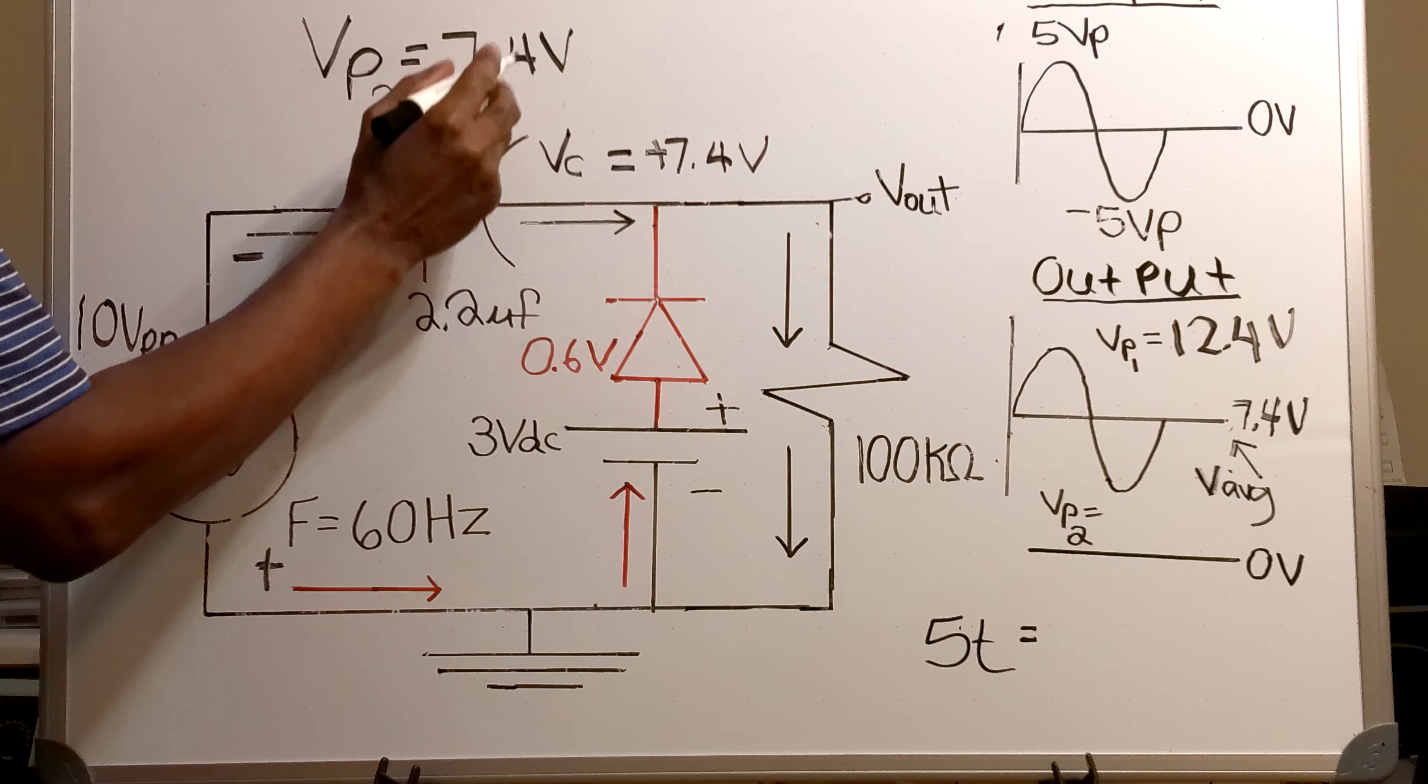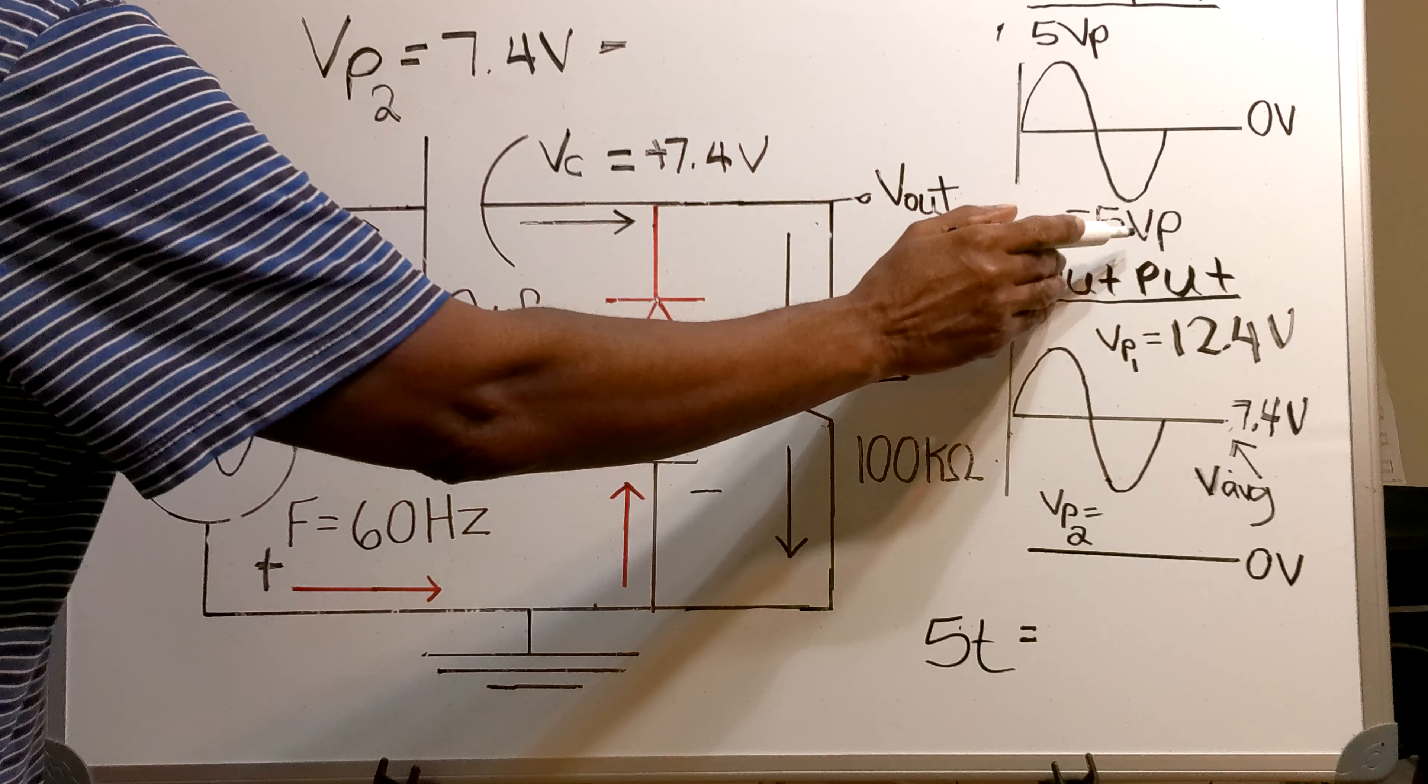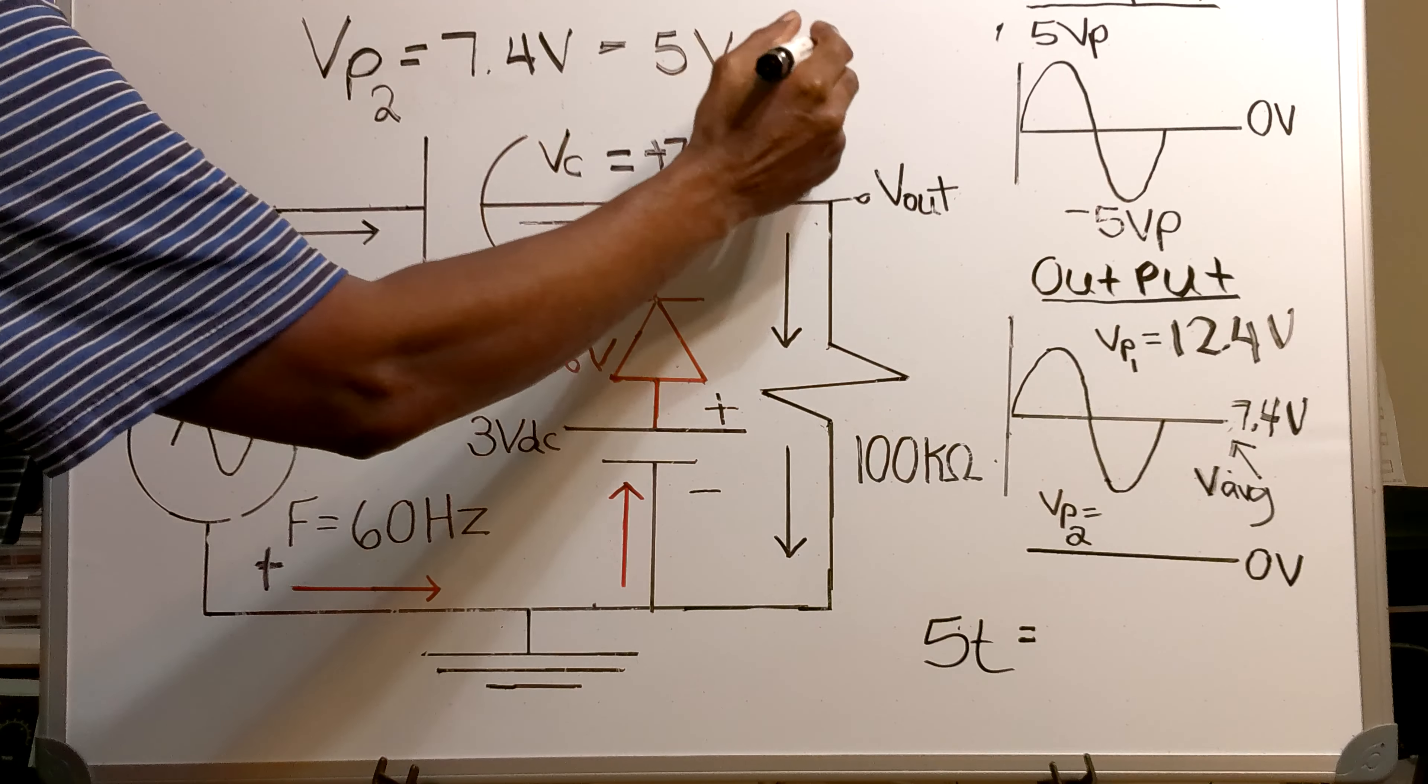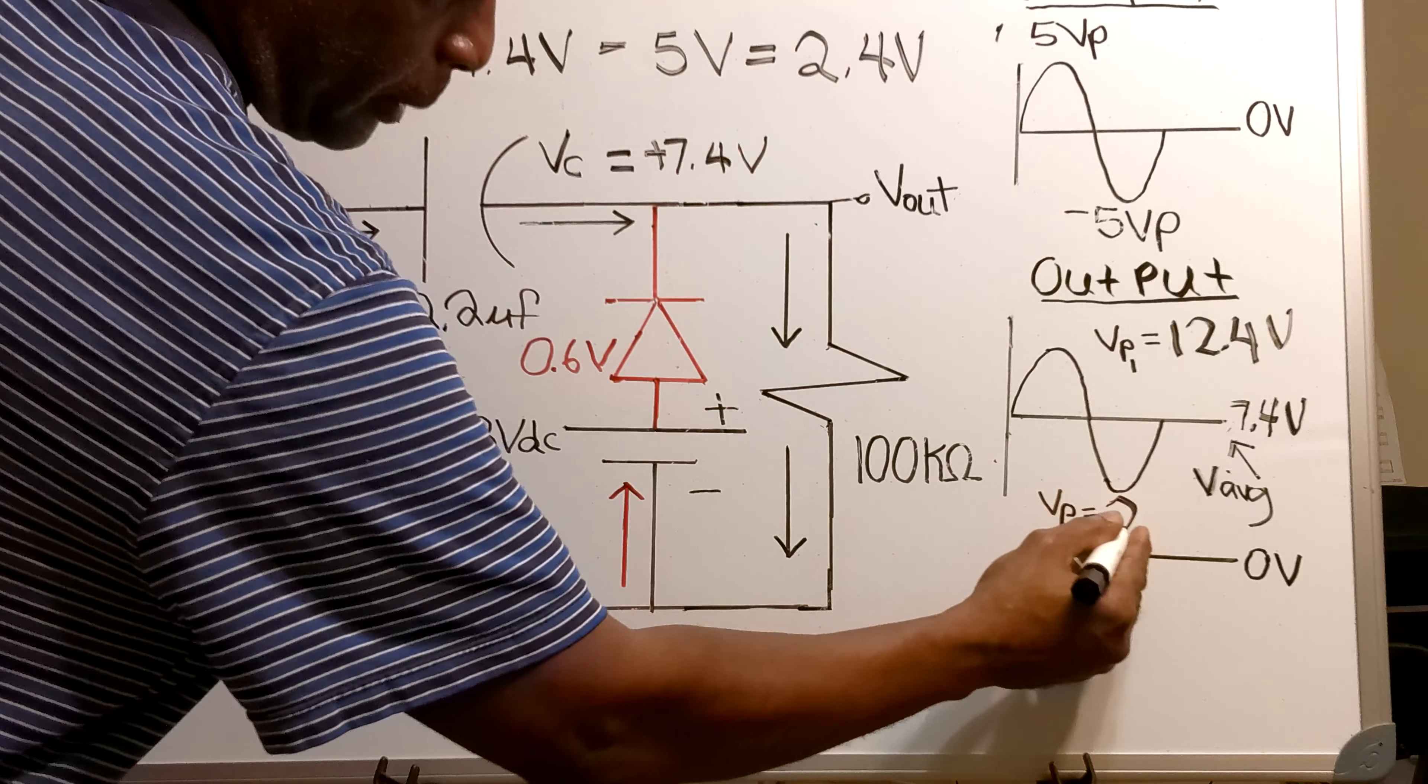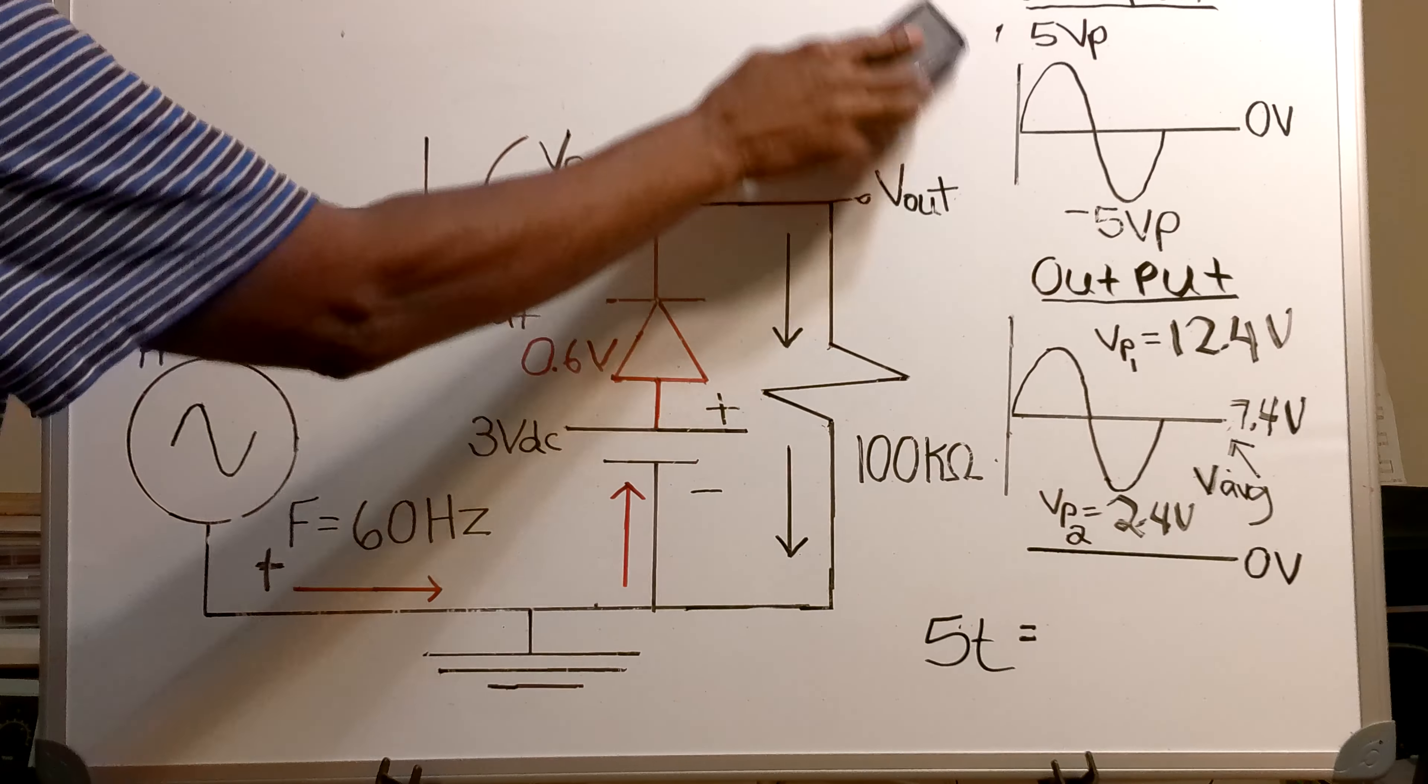And now the next voltage I'll find is VP2. And VP2 equals 7.4 volts minus 5 volts, minus the 5 volts of the bottom peak. And that gives you a voltage of 2.4 volts right here for VP2.